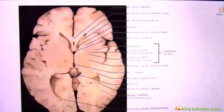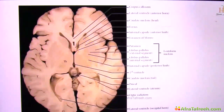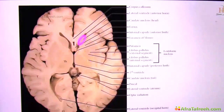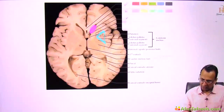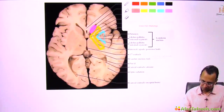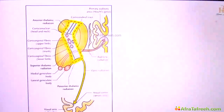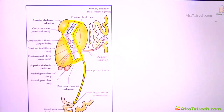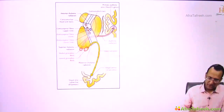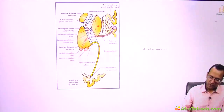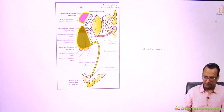This is the internal capsule you have seen already. There is one anterior limb which is sandwiched between the caudate more medially and the lentiform laterally, and the thalamus is actually more medial. This diagram shows a superior view of the right side of the brain showing the anterior limb, posterior limb, and the bend called the genu. The lentiform nucleus is lateral to the internal capsule, and the head of the caudate nucleus and the thalamus are medial.